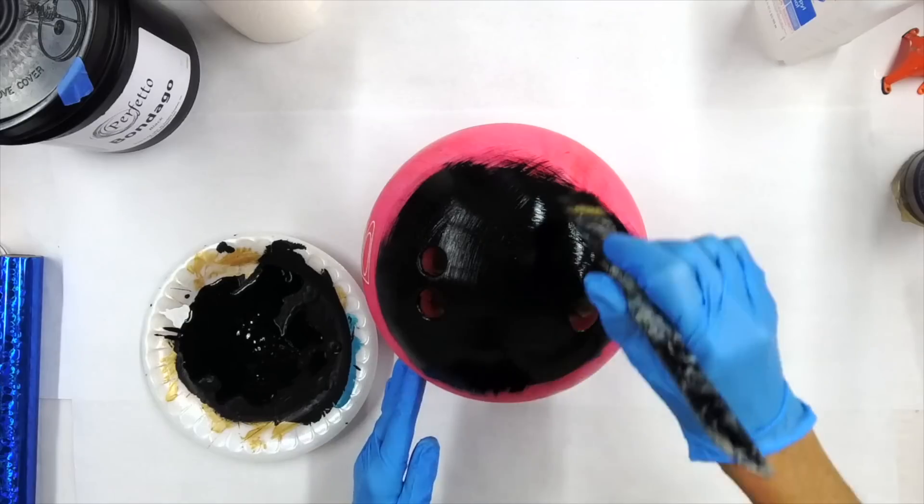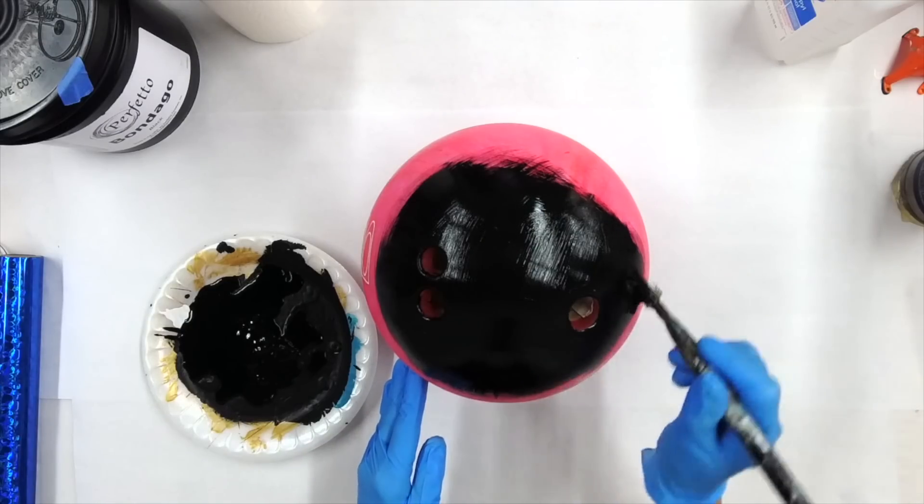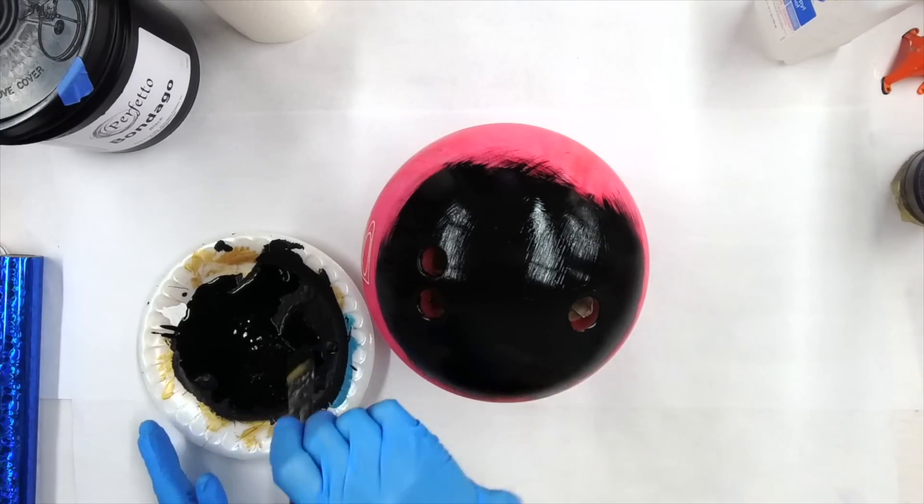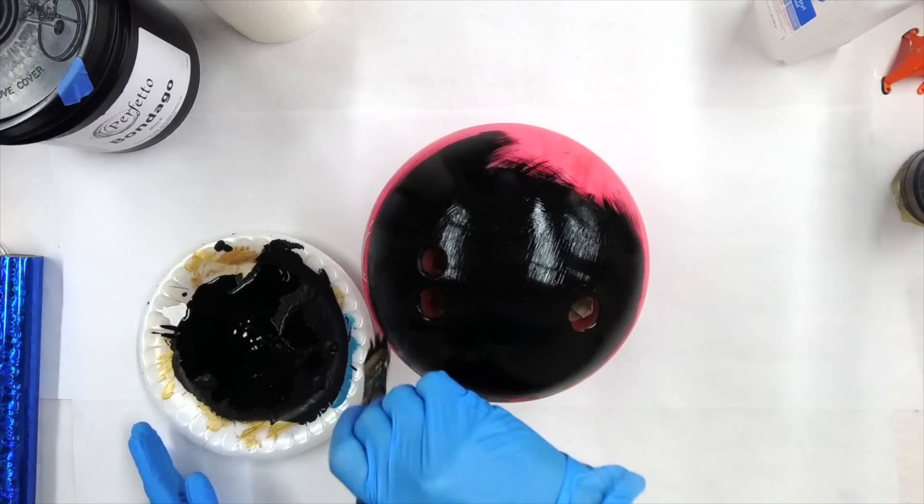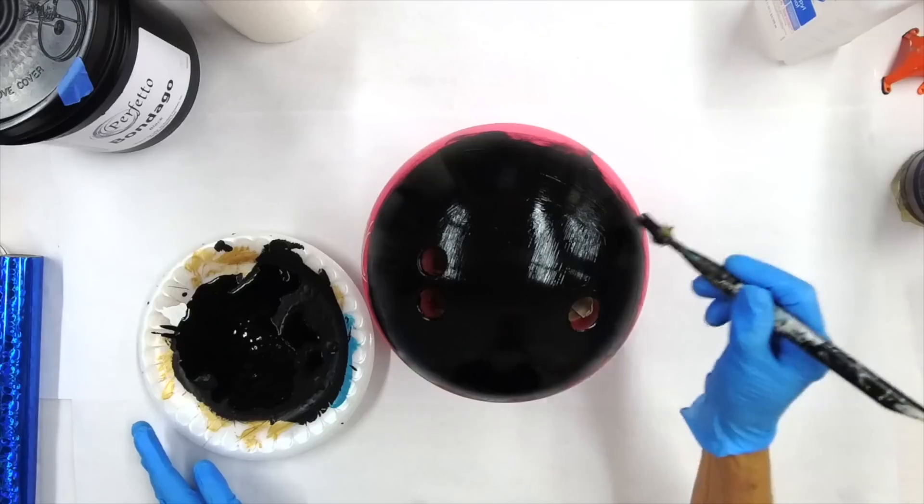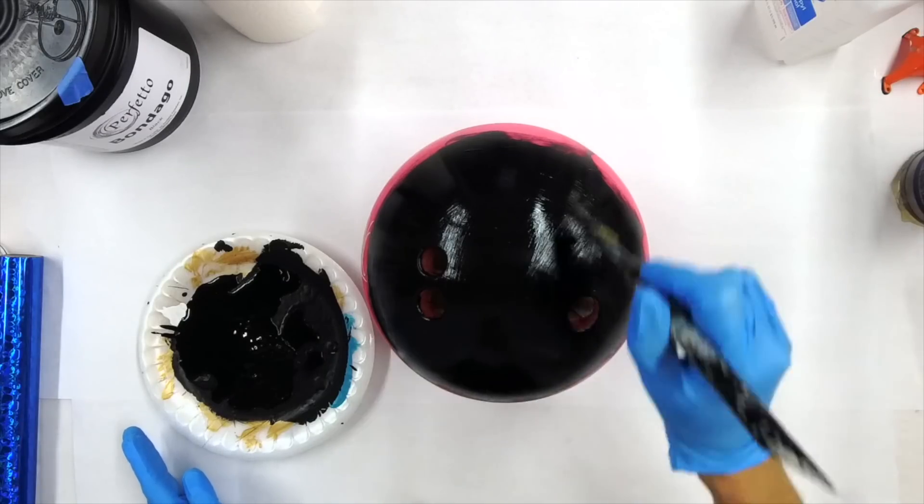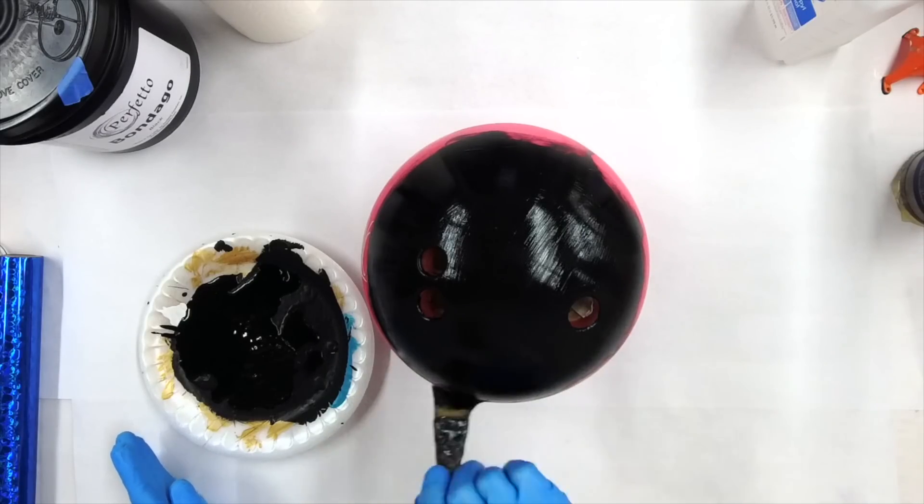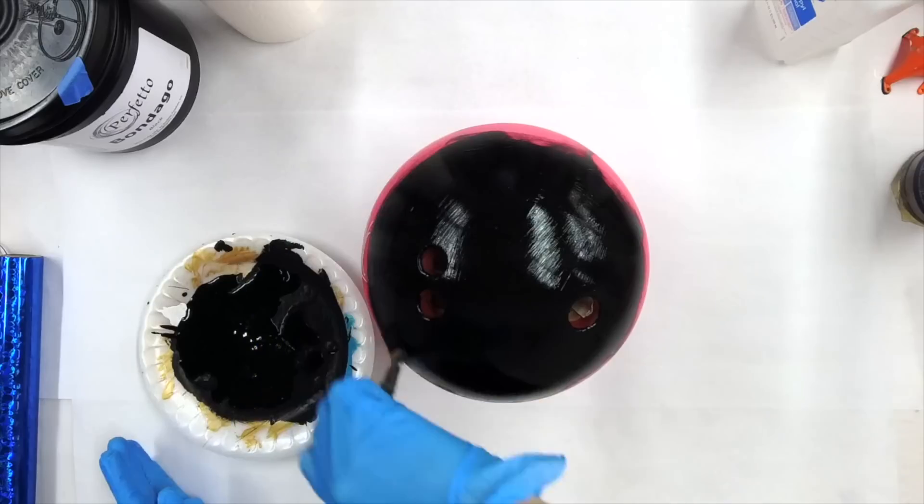So like I said, I'm going to try to get a coat on the base section here. But I'm leaving enough of the ball, hopefully, that I can grab it and move it on top of, or flip it upside down, I should say. So this bottom section is on top of the tape.